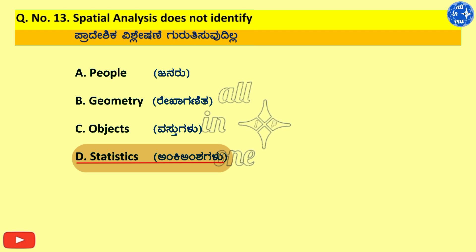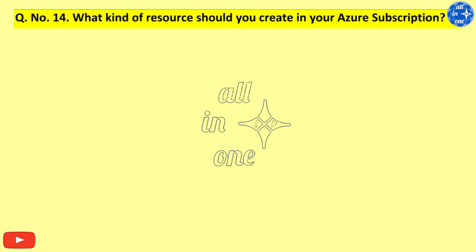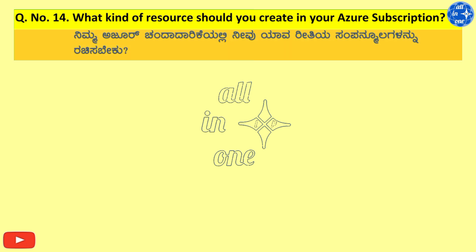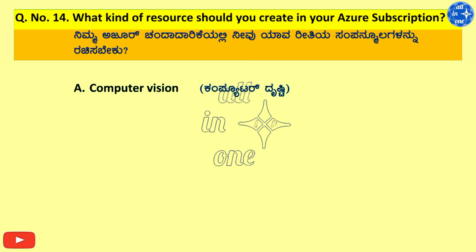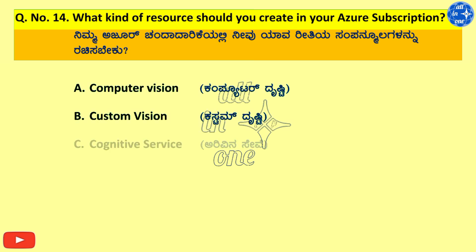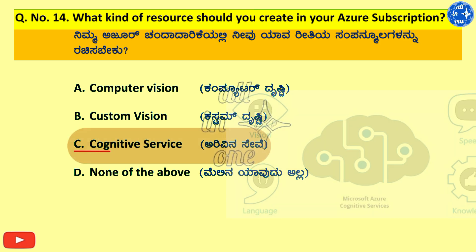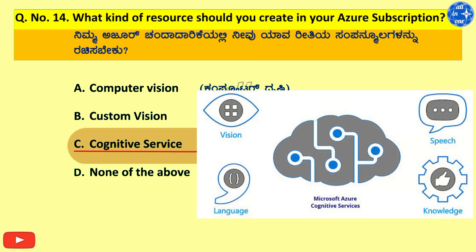Options: A. Computer Vision, B. Custom Vision, C. Cognitive Service, D. None of the above. Right answer is Cognitive Service.